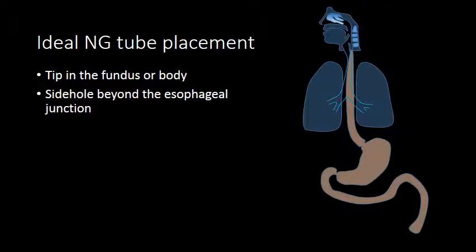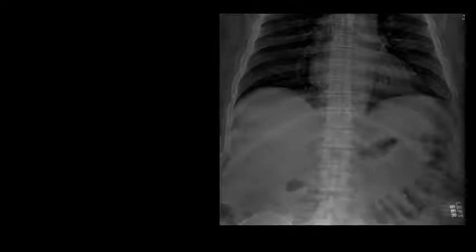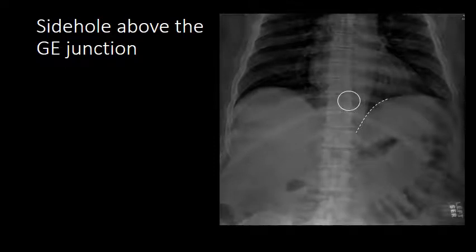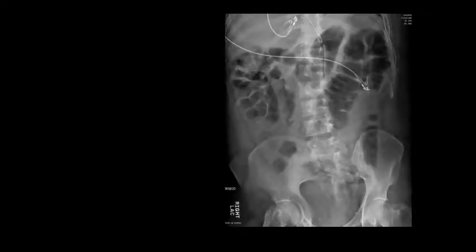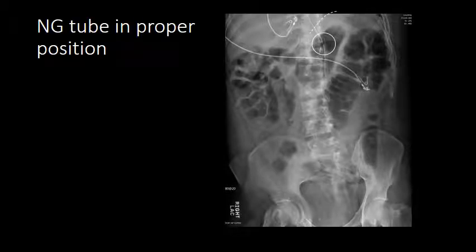When you think about nasogastric tubes as opposed to feeding tubes, one important detail is the side hole of the nasogastric tube. The side hole can be delineated on a plain radiograph as a break in the bright white line of the catheter, and this side hole needs to be below the gastroesophageal junction for proper function. Here is a commonly seen example of a suboptimally positioned nasogastric tube — the break in the white line is above the diaphragm. This catheter needs to be advanced approximately five centimeters for the side hole to go below the gastroesophageal junction. In another example, the break in the white line is within the fundus of the stomach below the diaphragm — this is a nasogastric tube in ideal position.